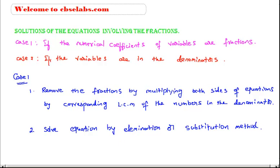That is, for solving the equations which have numerical coefficients of variables as fractions, we follow these two steps: first, remove the fractions in the equations by multiplying both sides by the corresponding LCM of the numbers in the denominator, and then solve the obtained equations using elimination or substitution method.